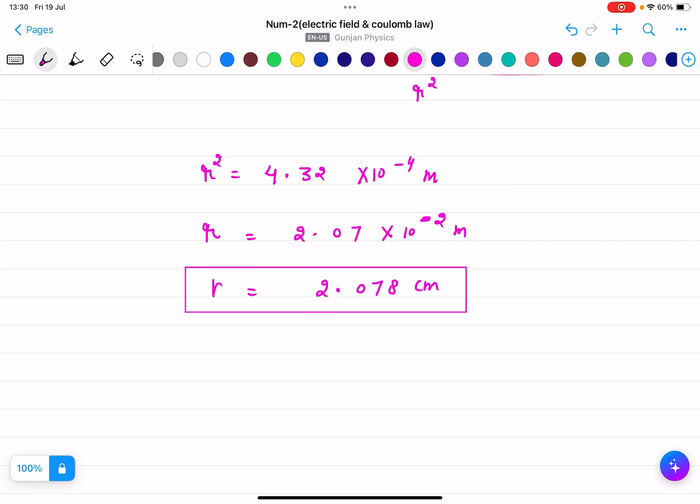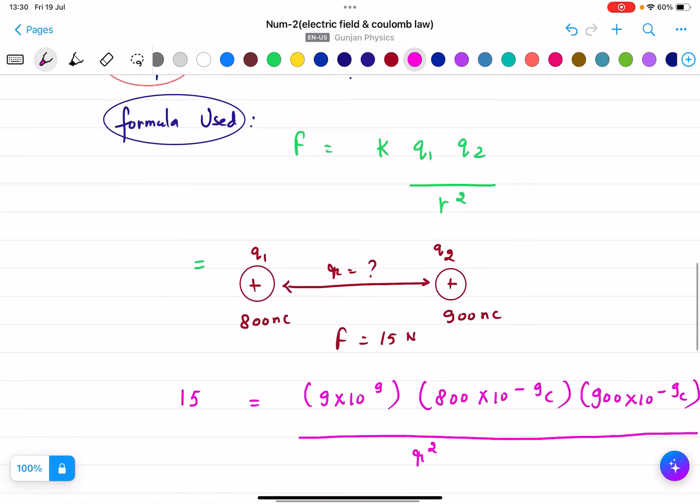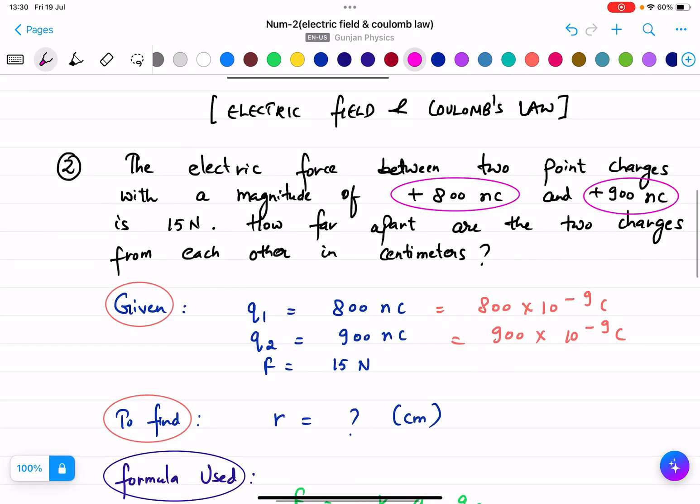So 2.08 is also the correct answer if we round off the values. So we can just write 2.08 centimeter is the correct answer. I hope you understood this question. Thank you.